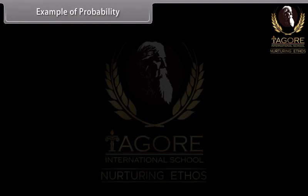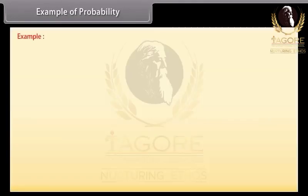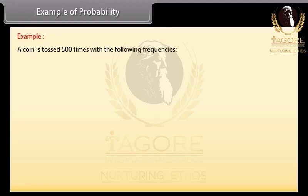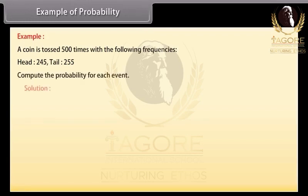Example of probability. A coin is tossed 500 times with the following frequencies: Head 245, Tail 255. Compute the probability for each event. Solution: